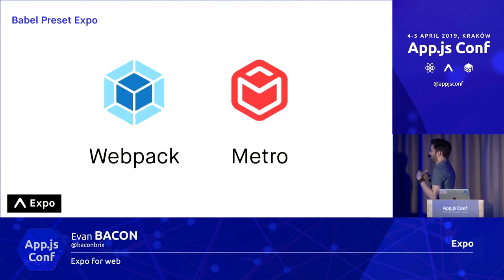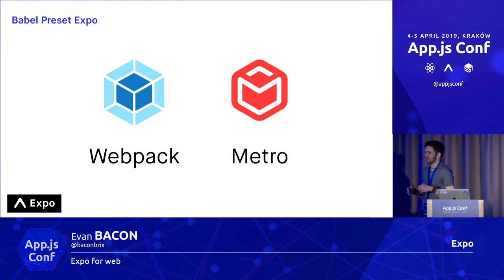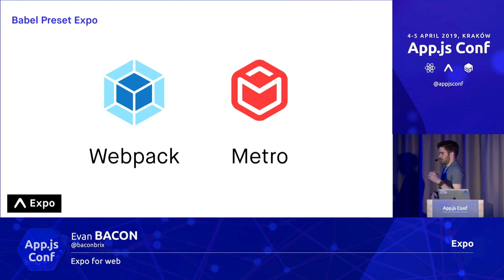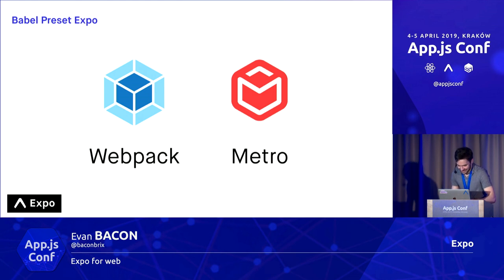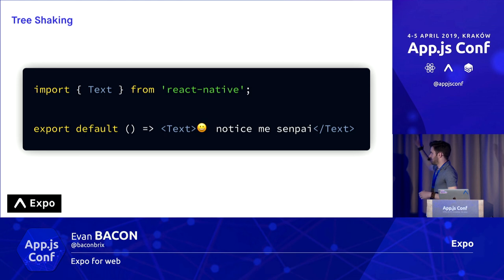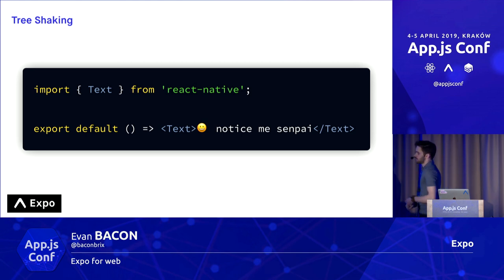One thing Babel Preset Expo does is delegate tasks between Webpack and Metro. If you're not familiar with React Native, it uses the Metro bundler, whereas React and most of the web uses the Webpack bundler. We needed to create a system which could run both your native app and your web app using two separate bundlers. Consider this block of code — we're just importing text from React Native, and we have a component that we're exporting with some text. We're not importing view, image, or scroll view, so we don't want any of those in our final bundle.